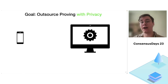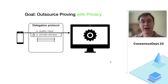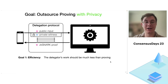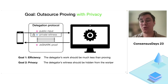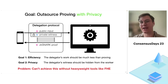Our goal is to do this outsourcing, but to do it privately. We now have a delegation protocol where we provide the witness in some encrypted or obfuscated form to the worker, and with some rounds of interaction, the worker can still produce the ZK-SNARK for us. Our goals are efficiency — we want the delegator's work to be much less than local proving — and privacy of the witness from the worker. We know how to do this, but it requires heavy tools such as fully homomorphic encryption, which doesn't make it practical.